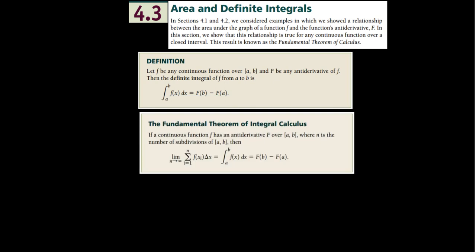Starting at the top, in 4.1 and 4.2 we considered examples in which we showed a relationship between the area under the graph of a function f and the function's antiderivative, capital F. In this section, we show that this relationship is true for any continuous function over a closed interval. This result is known as the fundamental theorem of calculus.